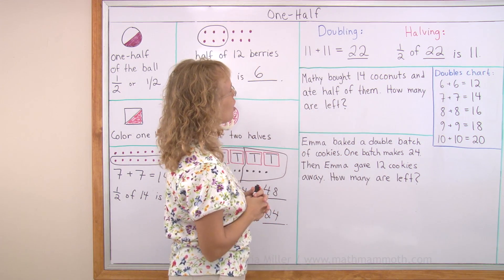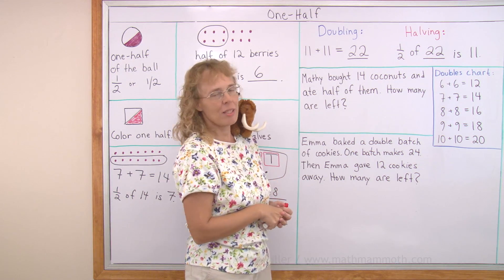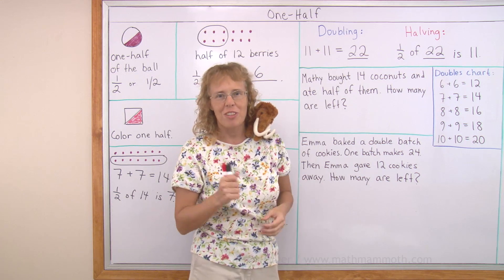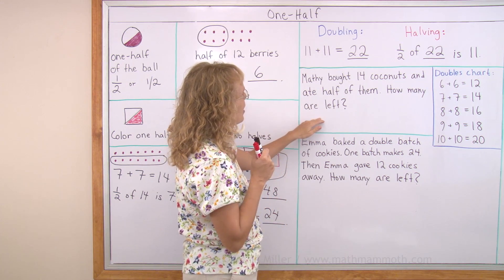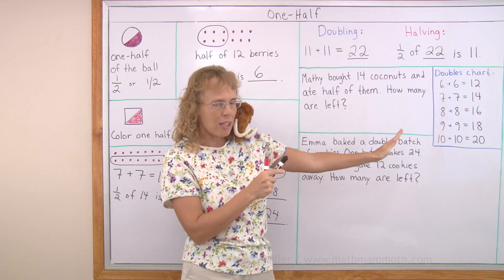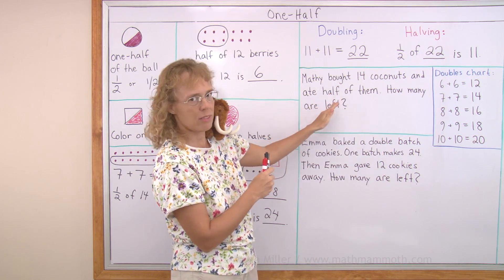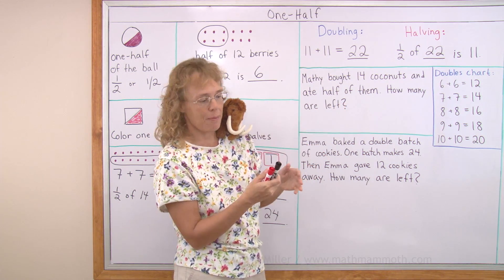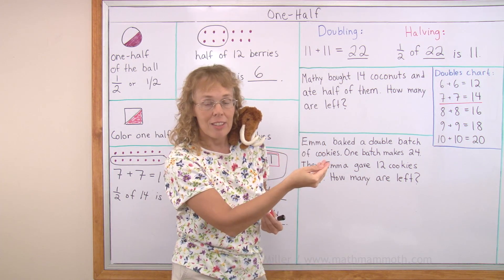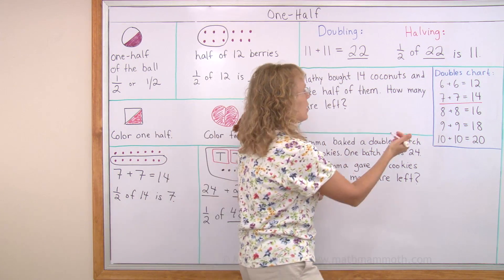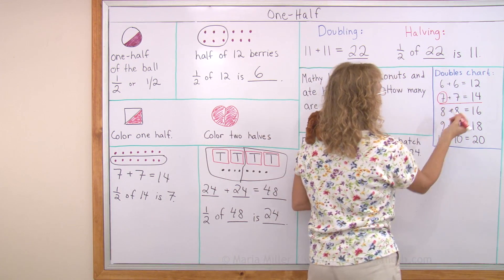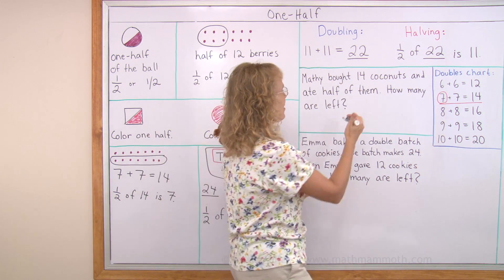Matthew bought fourteen coconuts and ate half of them. How many are left? Well, that's a big appetite, but coconuts are good for you. He ate half of them. Can we use our doubles chart? Half of fourteen — you see here — half of fourteen is seven. So he ate seven. He ate half of them, and so what is left is the other seven — the other half. Seven are left.